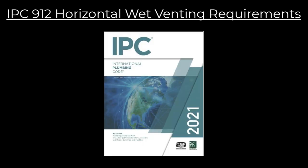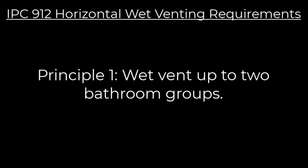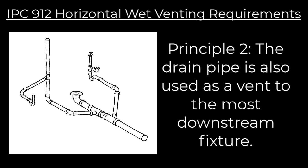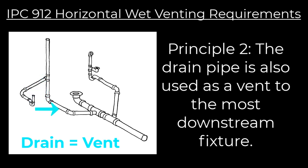Let's examine the principles for wet venting from the International Plumbing Code, section 912. Looking at the horizontal wet vent: principle one — a wet vent can serve up to two bathroom groups. Principle two — the drain is also considered a vent from the dry vent connection to the most downstream fixture drain connection, meaning the drain pipe is being used as a vent all the way down through the horizontal branch to the last fixture connected.